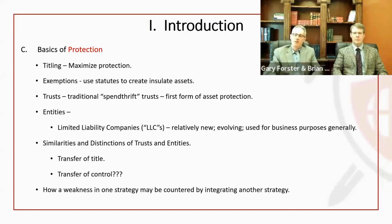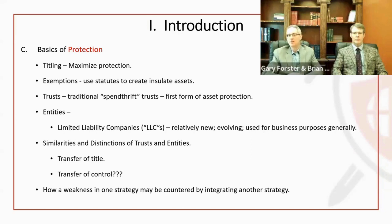Some basics involve four areas of asset protection: titling, exemptions, trusts, and business entities. Titling doesn't involve using any kind of structure — it's basically allowances. For instance, in Florida we have the husband and wife titling. Many states have this called tenancy by the entireties, which comes from English common law.